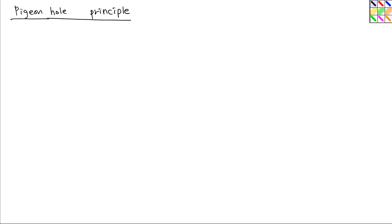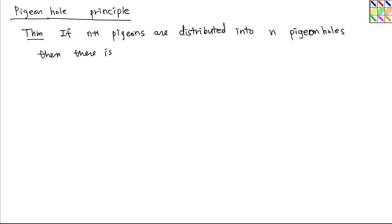In this video, we're going to learn the pigeonhole principle. The pigeonhole principle is a very simple principle which can be written as follows: If n+1 pigeons are distributed into n pigeonholes, then there is at least one pigeonhole with two or more pigeons.